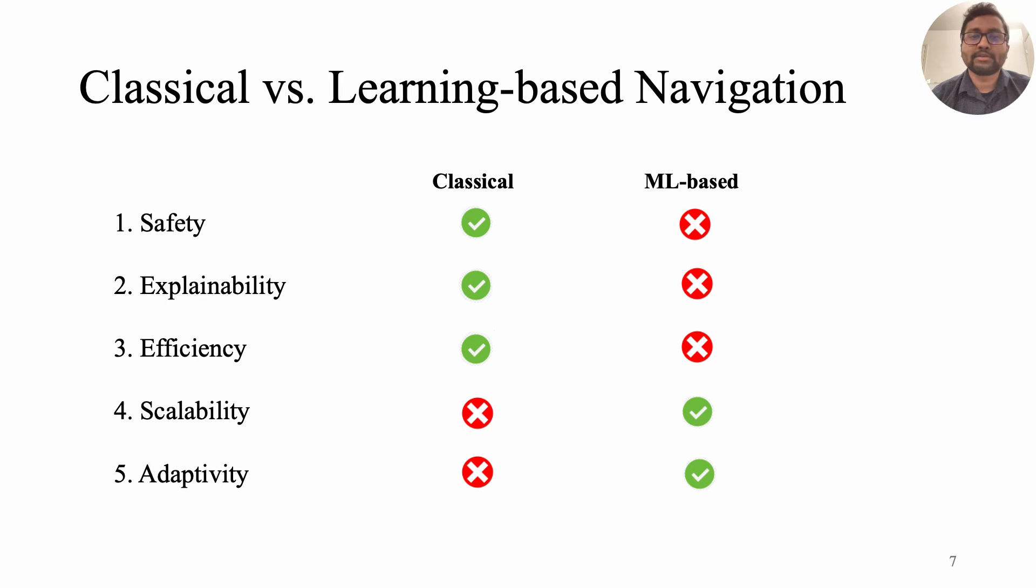We aren't there yet. Most robots today rely on classical navigation systems refined over decades to ensure safety and efficiency, but they lack the scalability and adaptability offered by recent advances in learning-based methods.